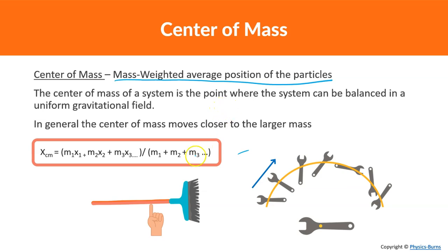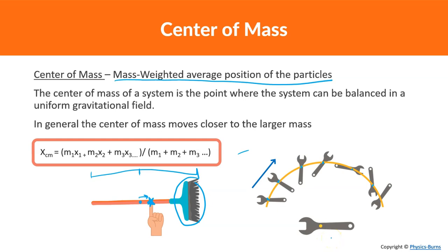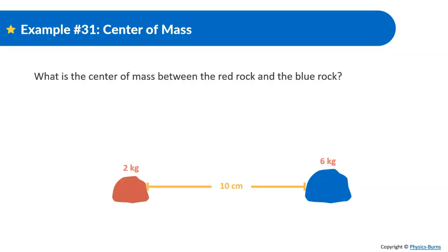In general, the center of mass moves closer to the larger mass. For example, with this broom, the middle is around here, but that's not where the center of mass is — there's a lot more mass on one side, so it shifts. Practically, the center of mass is where it's easiest to carry something, everything balances under that point, and when something rotates — like a wrench — it rotates around the center of mass.